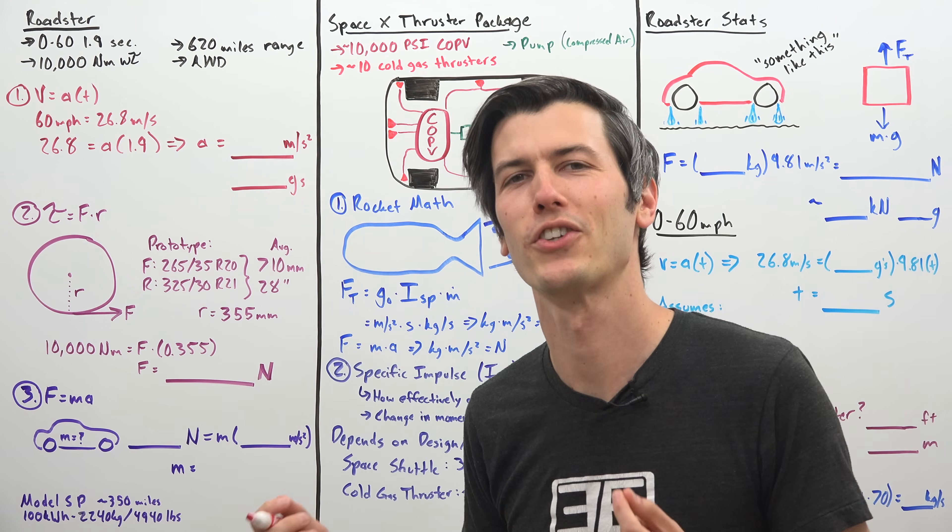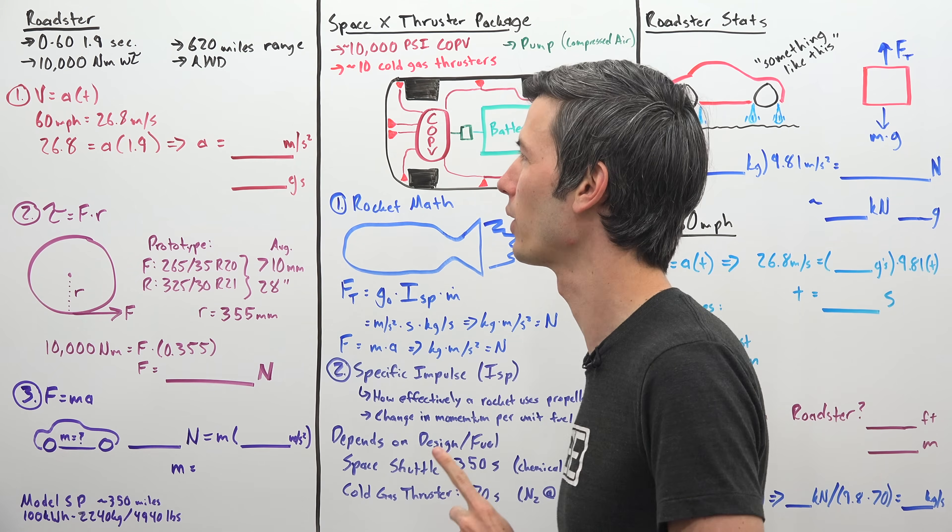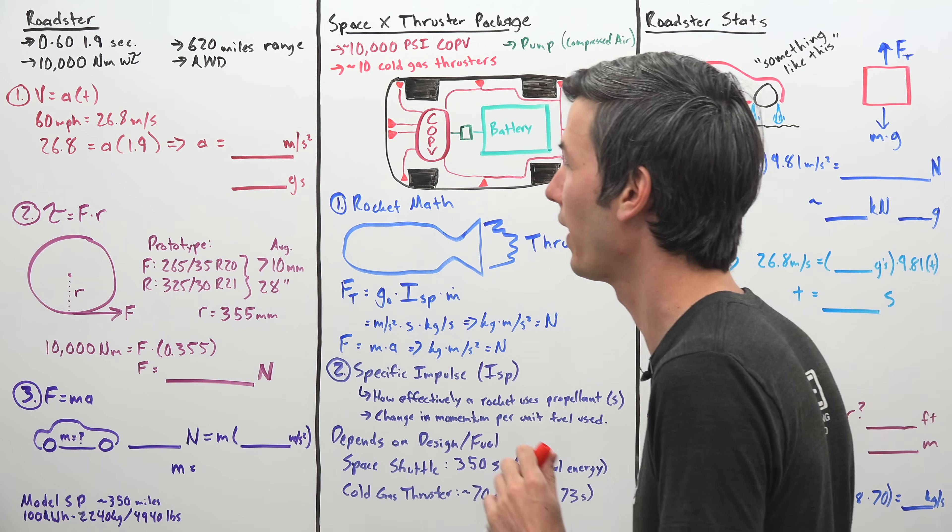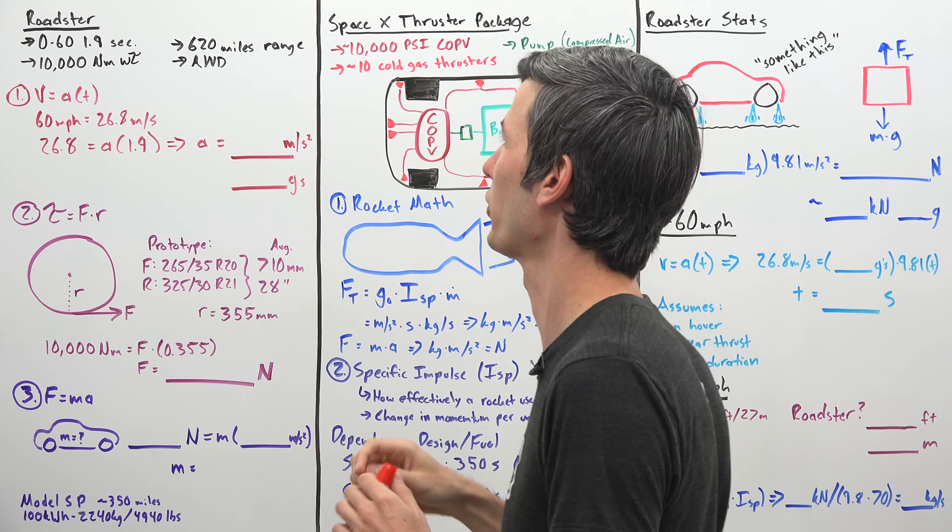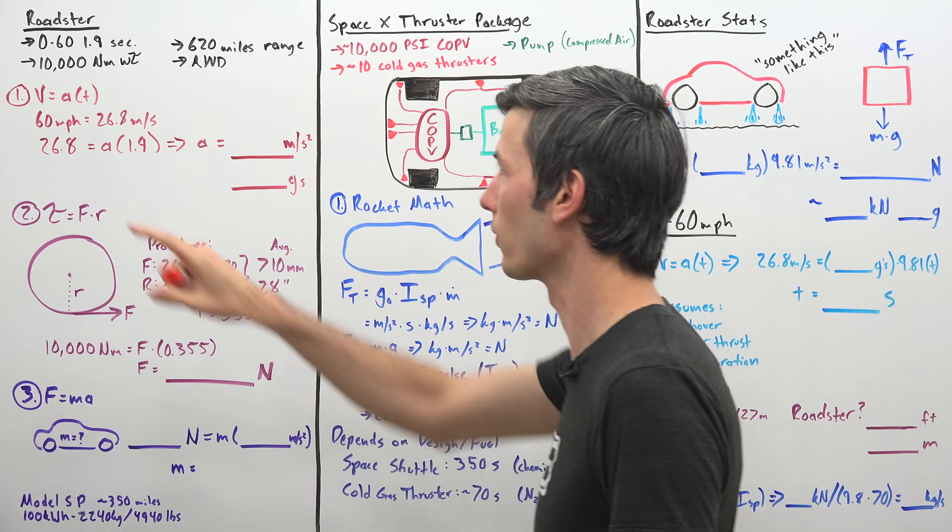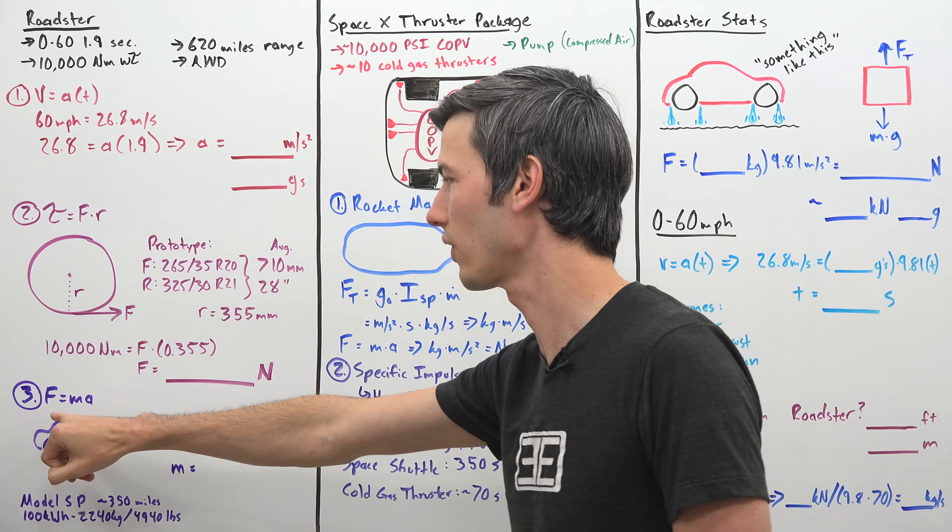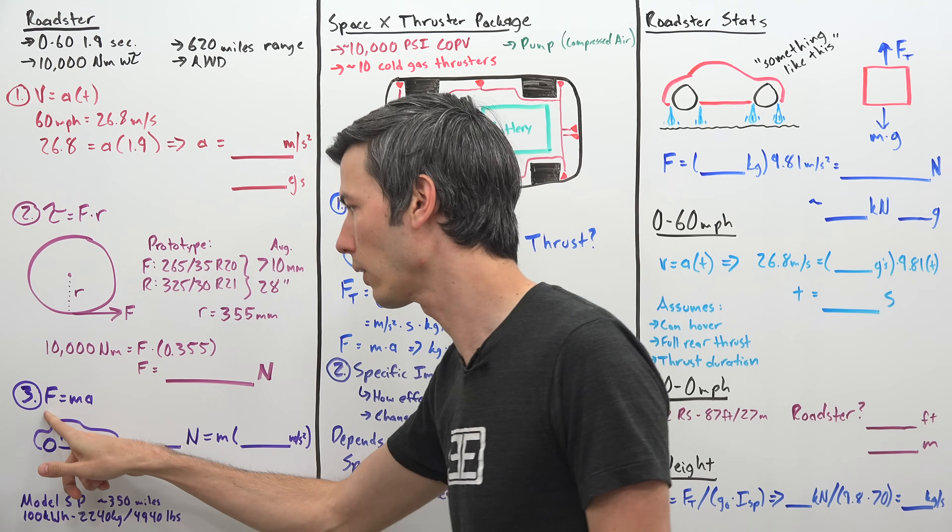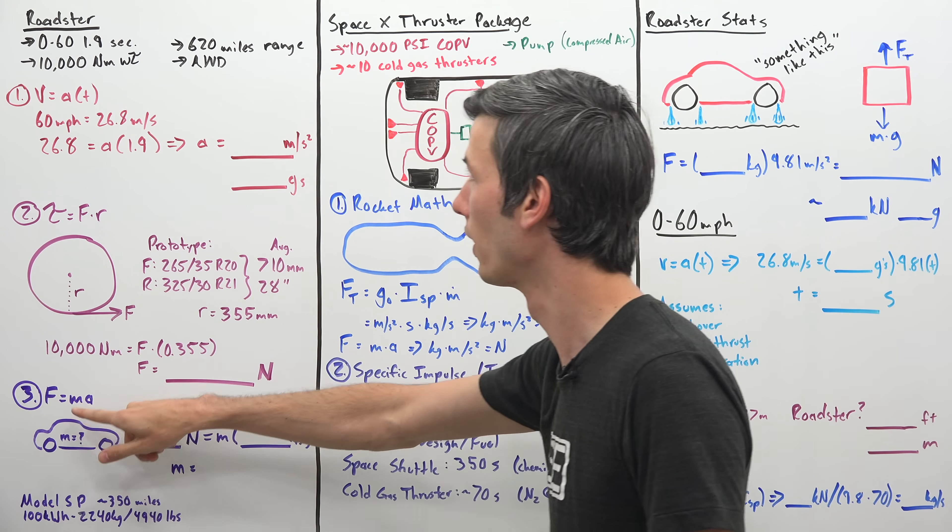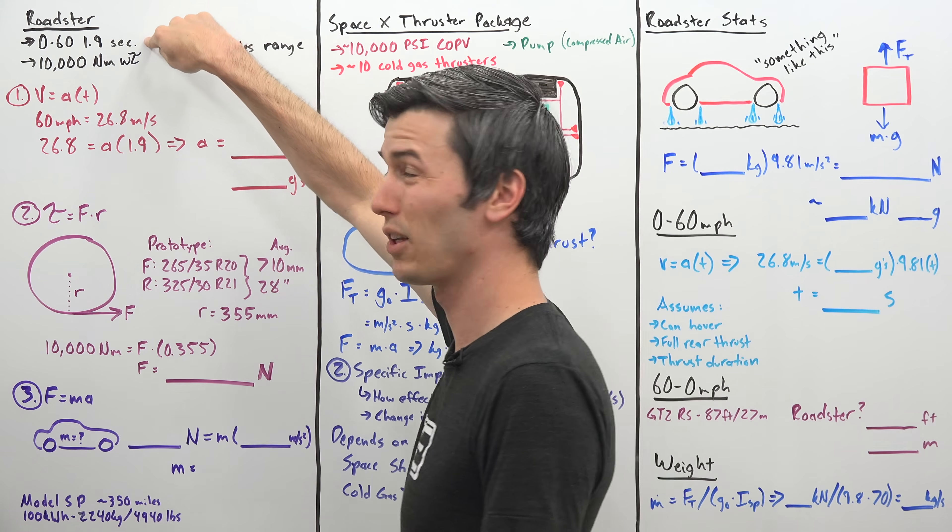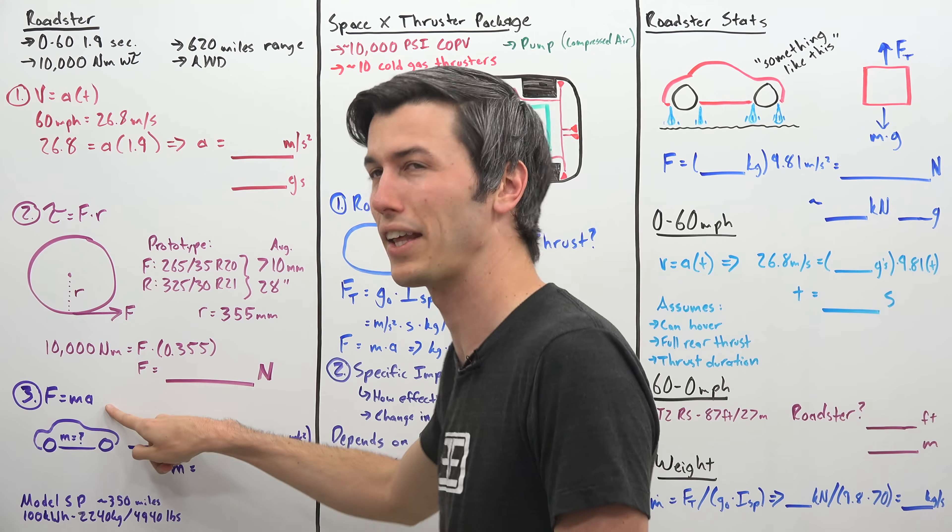So the first thing I want to figure out is how much does the Tesla Roadster weigh? And I have an idea of what I think it's going to weigh, but can we figure out how much it's going to weigh based on the limited figures that Tesla has provided? So they've told us that the Roadster will have a 0 to 60 of 1.9 seconds. This will be the base version and that it will have 10,000 Newton meters of wheel torque. So we're trying to figure out the Tesla's mass. So Newton tells us that force is equal to mass times acceleration. We can figure out what our force is, we can figure out what our acceleration is, and then that will allow us to learn what our mass is.